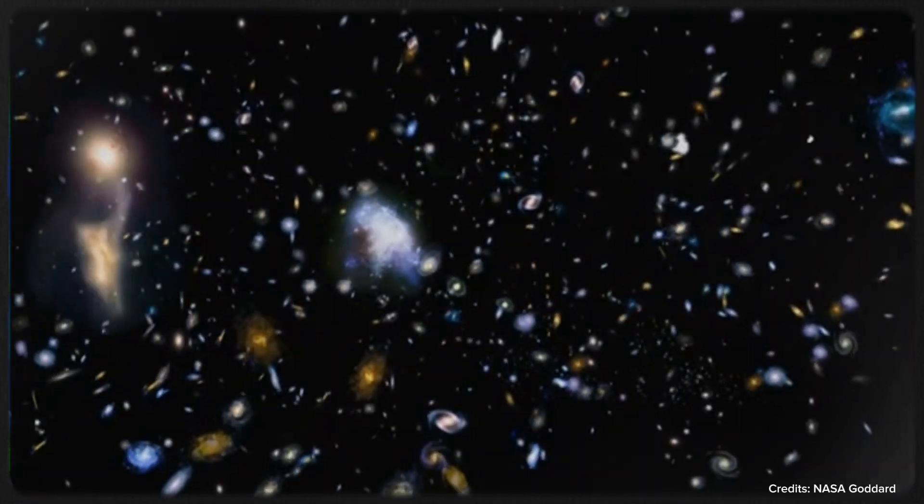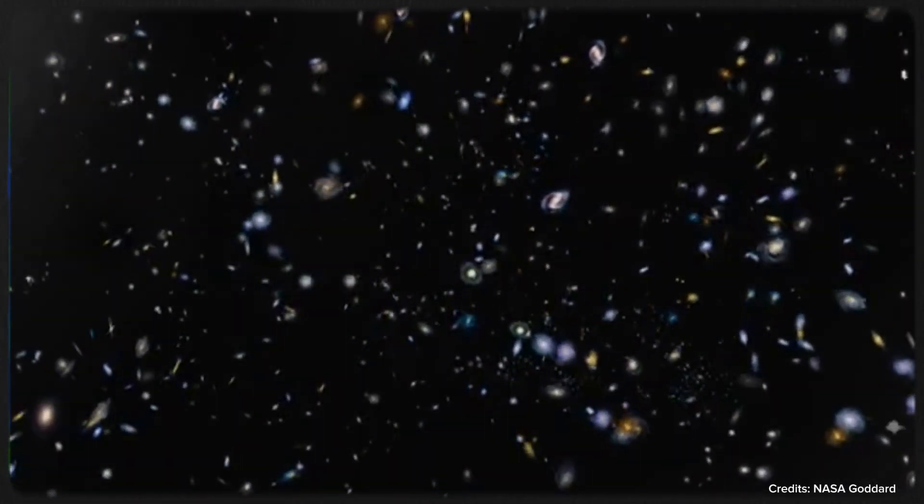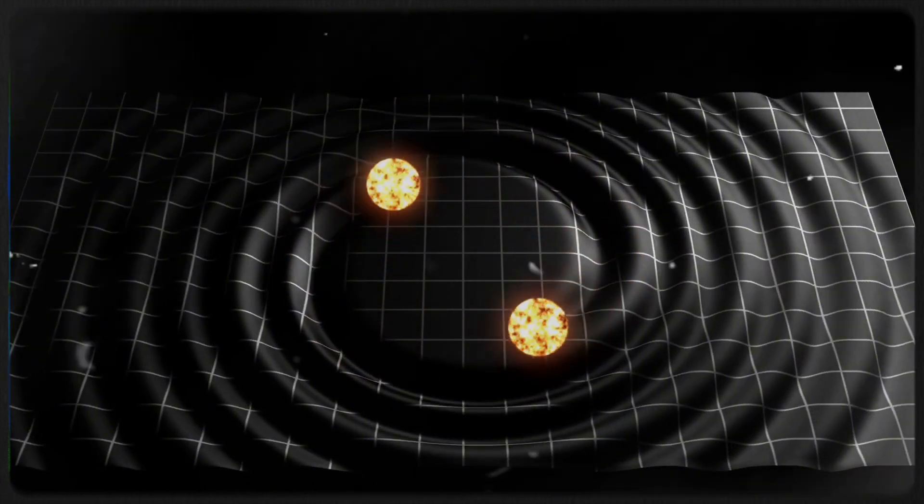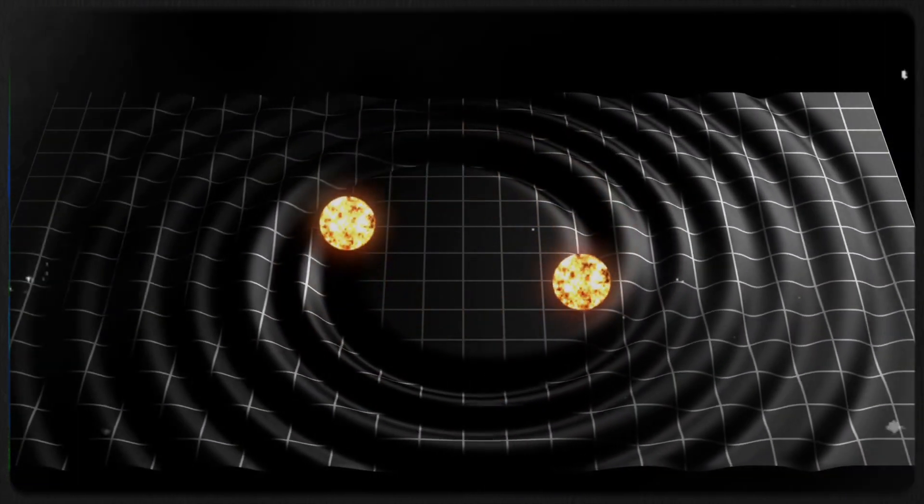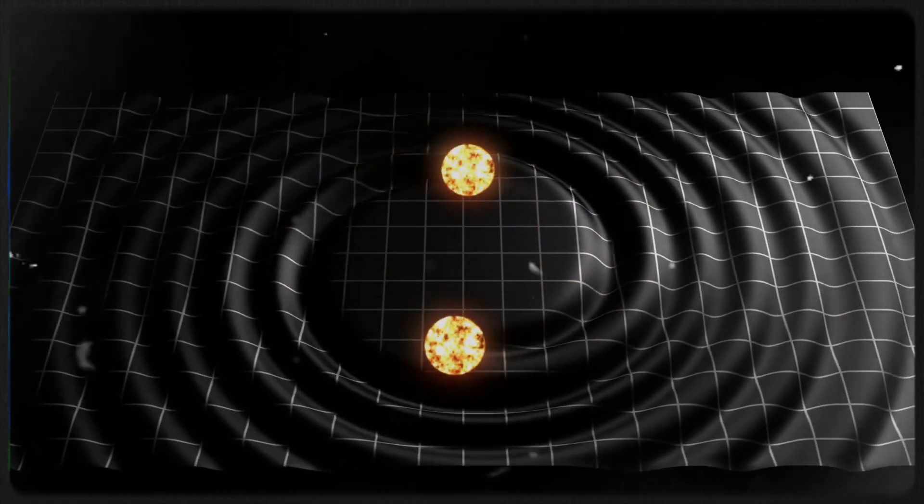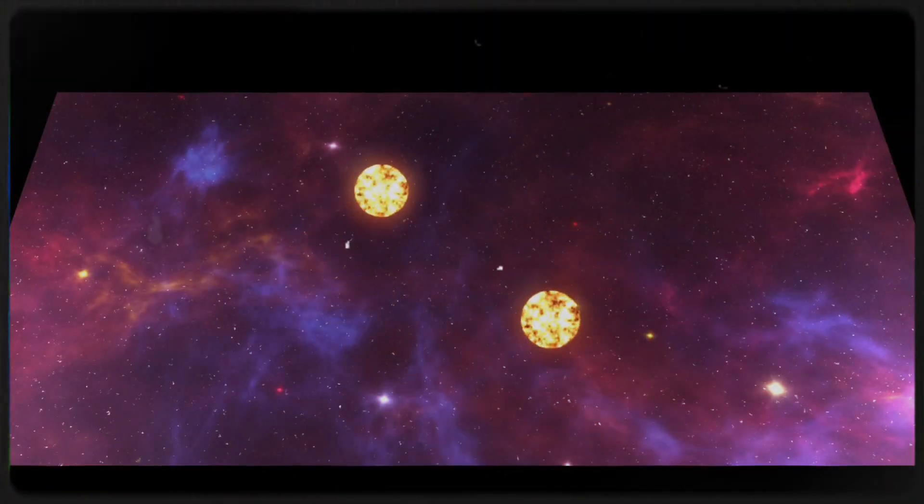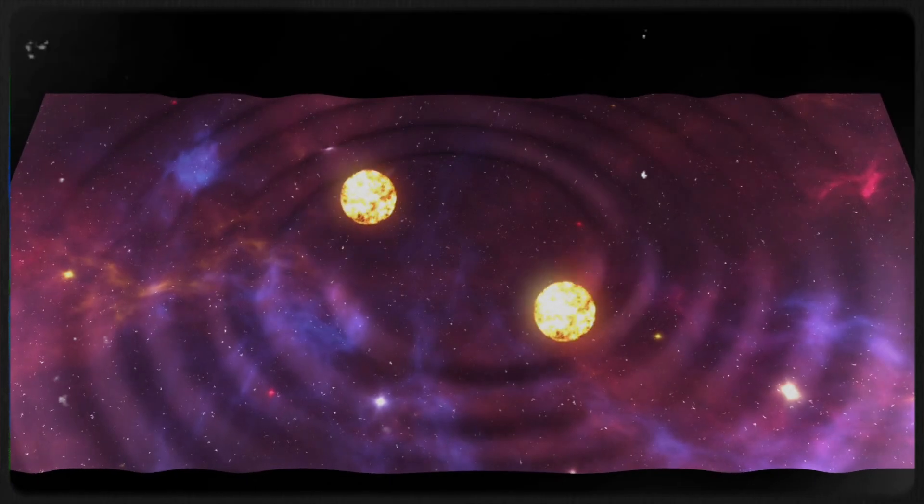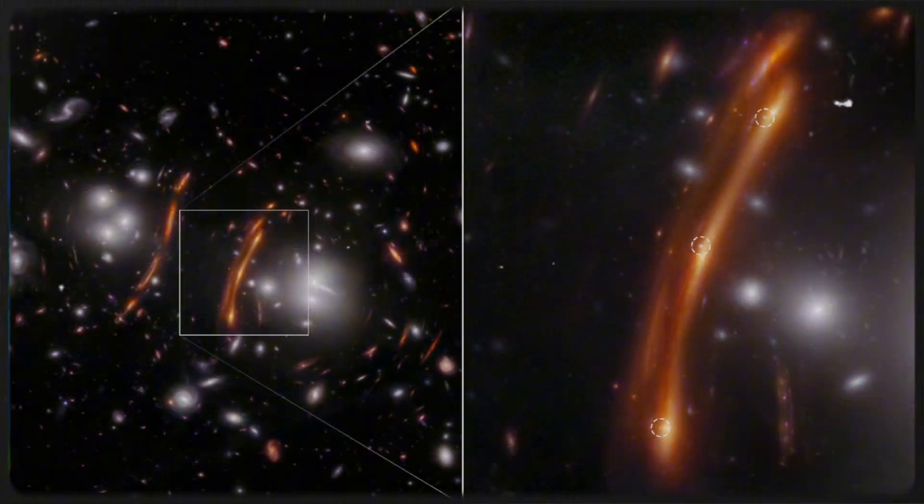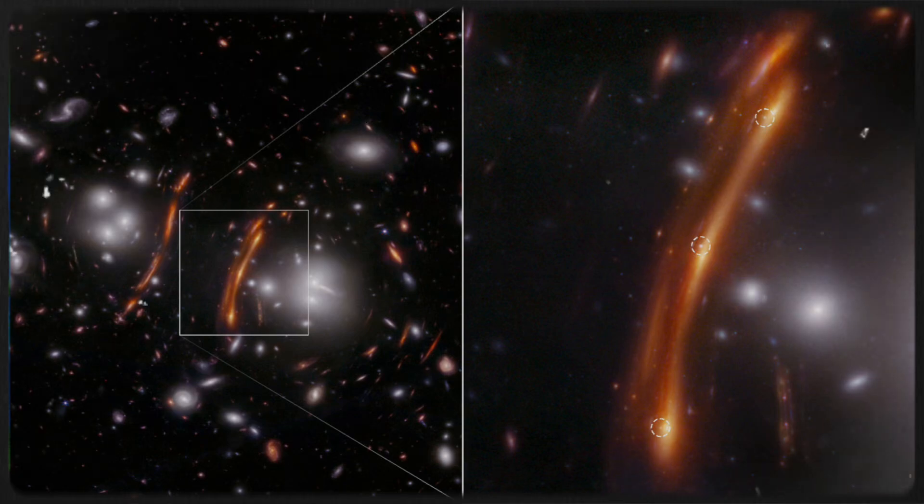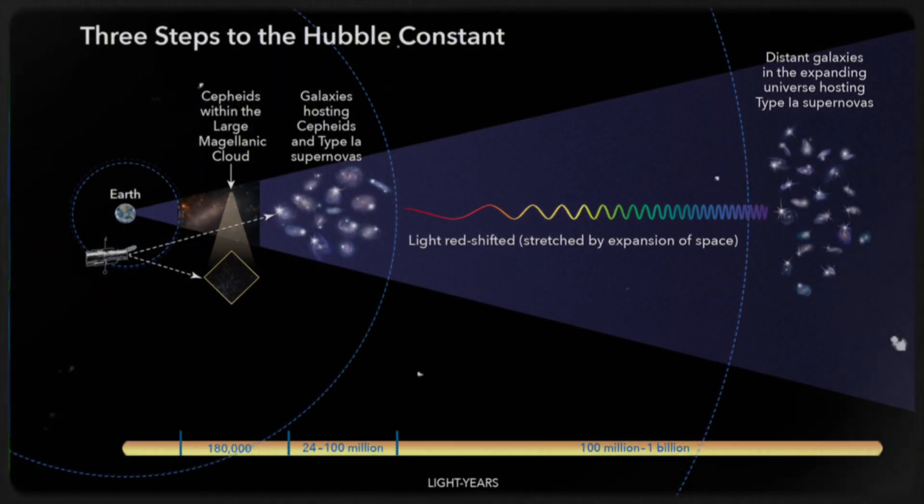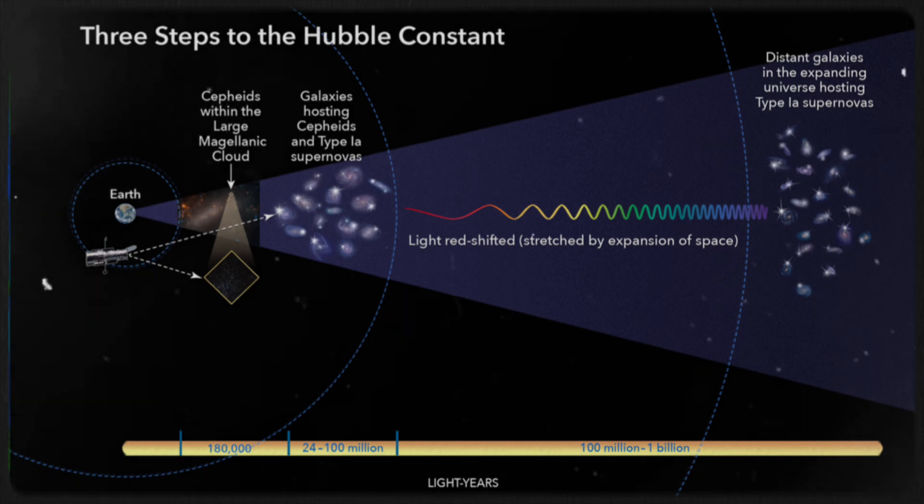Another exciting path forward involves gravitational waves, ripples in spacetime caused by cosmic events like neutron star mergers. These waves act as standard sirens, offering a clean, direct way to measure distances without the uncertainties tied to traditional methods like Cepheids or supernovae. Combining gravitational wave data with light-based observations could provide a fresh, unbiased perspective on the Hubble tension.